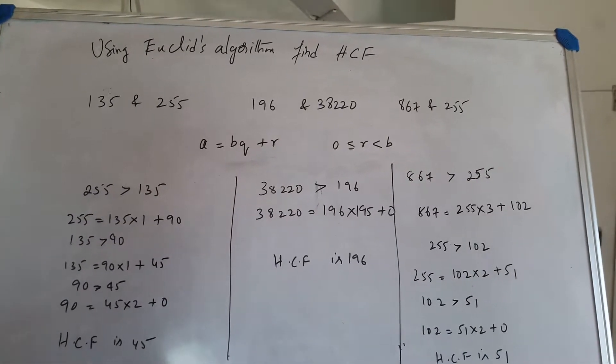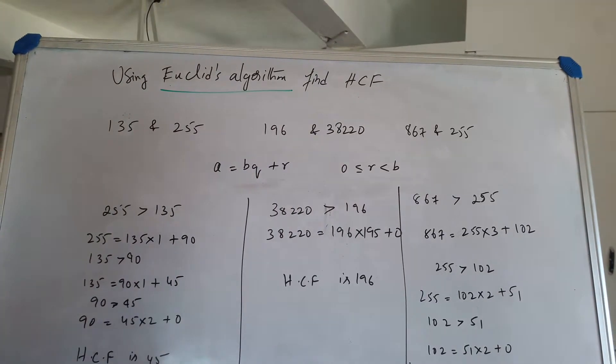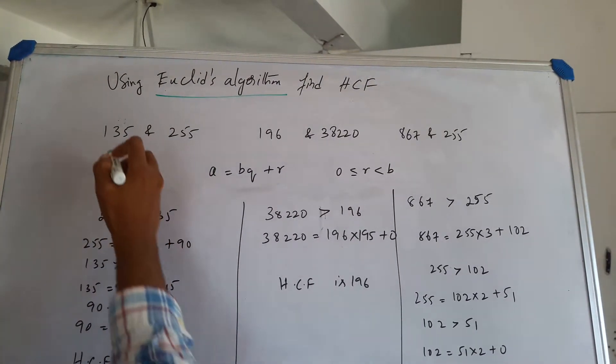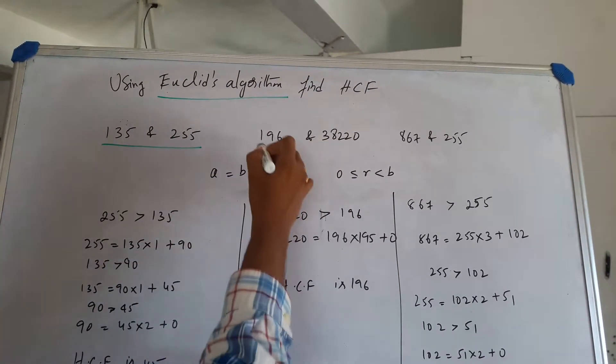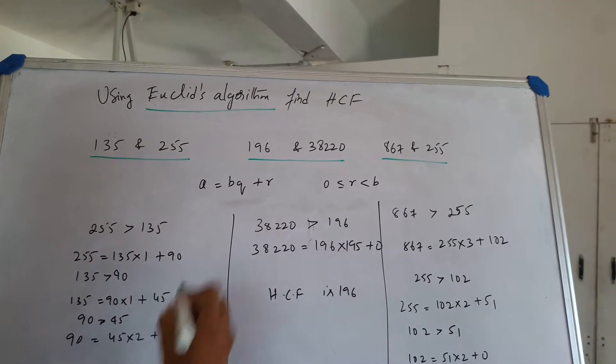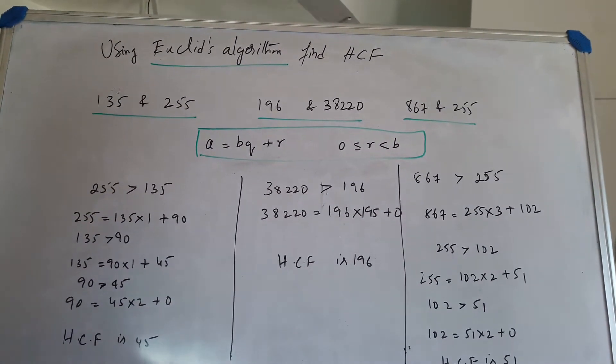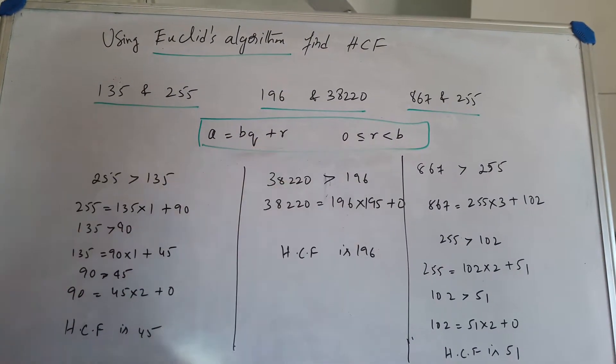To solve this, to find the highest common factor by using Euclid's algorithm. Now these are the problems which I have, three sets of problems. Using Euclid's theorem, we have a is equal to bq plus r.